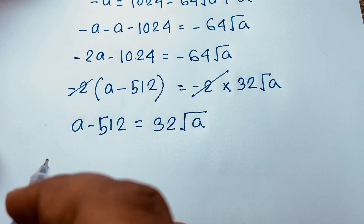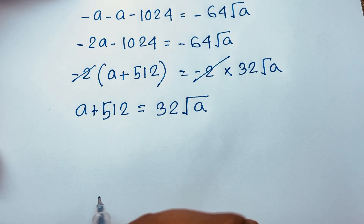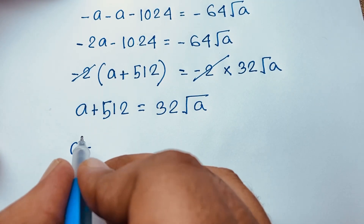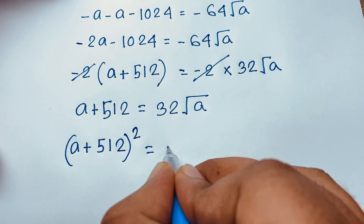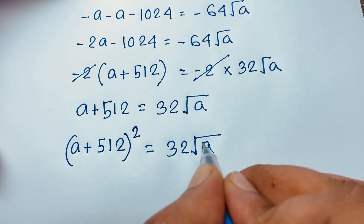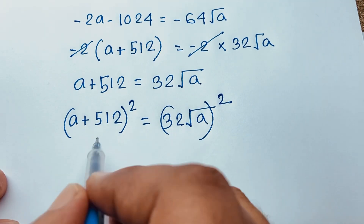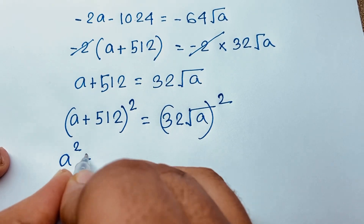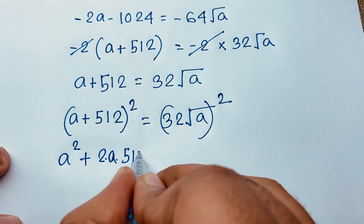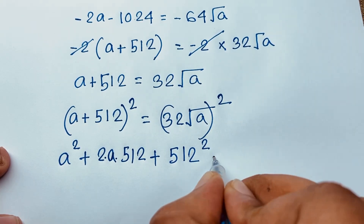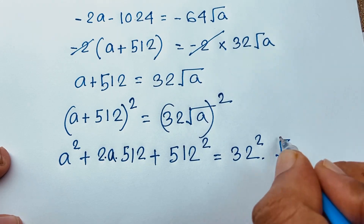Now I square both sides again. On the left, a minus 512 whole squared, and on the right, 32 times square root of a, whole squared. Expanding the left side using (a + b)² gives: a squared plus 2 times a times 512, plus 512 squared, equal to 1024 times a.